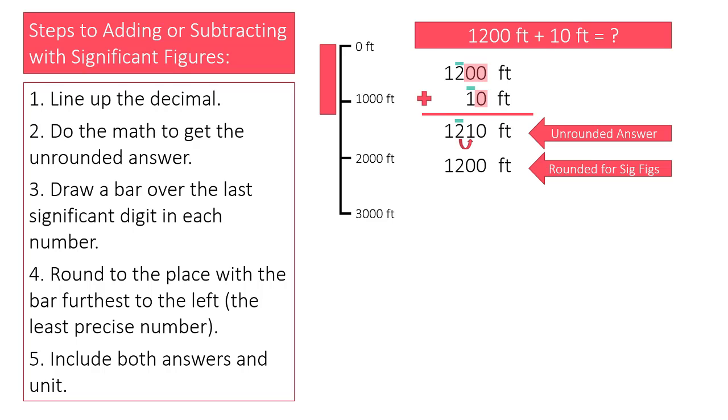If I knew it was 1,200 feet exactly, because my measuring device allowed that level of precision, I would need to write the number as 1,200 feet with a decimal at the end or write the number in scientific notation.